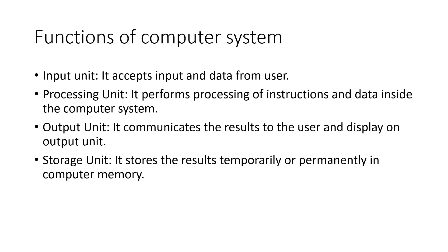Functions of a computer system — a computer system performs four functions: input unit, processing unit, output unit, and storage unit. The input unit accepts input and data from the user. The processing unit performs processing of instructions and data accepted from the user. The output unit communicates the result to the user and displays it on the output screen. The storage unit stores the result temporarily or permanently in computer memory.